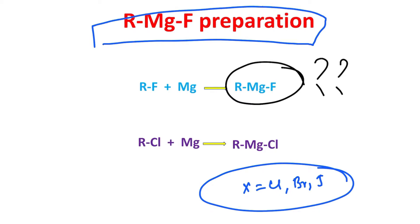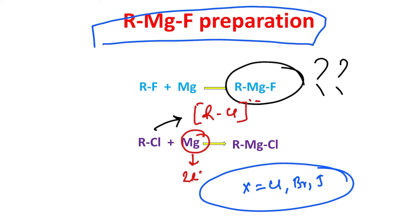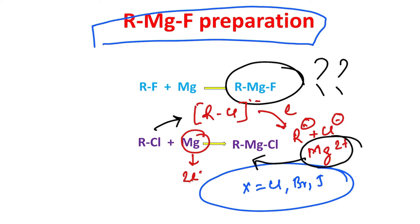So the question is: does this RMgF exist or not? Let's learn what the problem is and how to overcome it. The mechanism: magnesium produces two electrons, and Mg²⁺ is formed. This electron stepwise reduces RCl into R — you may consider RCl as a radical anion, or a combination of R• and Cl⁻. Another electron reduces these into R⁻ and Cl⁻, and since Mg²⁺ is present, it will produce RMgCl.